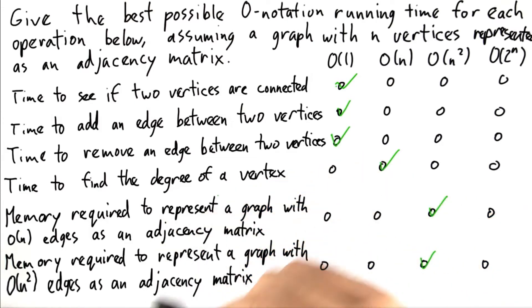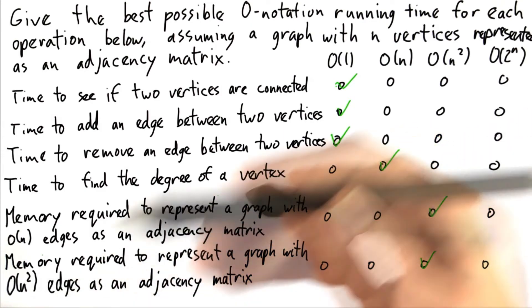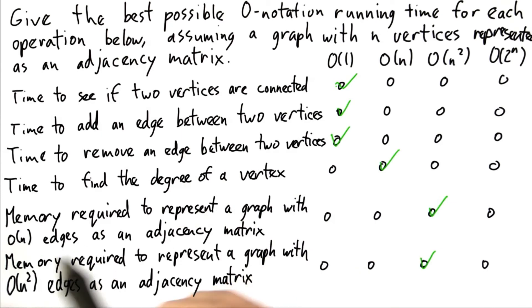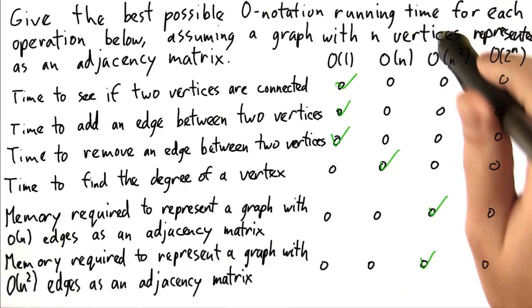You can pare that down a little bit if you're really clever, but with a naive adjacency matrix approach, the memory required isn't really a function of the number of edges so much as it is the number of vertices.